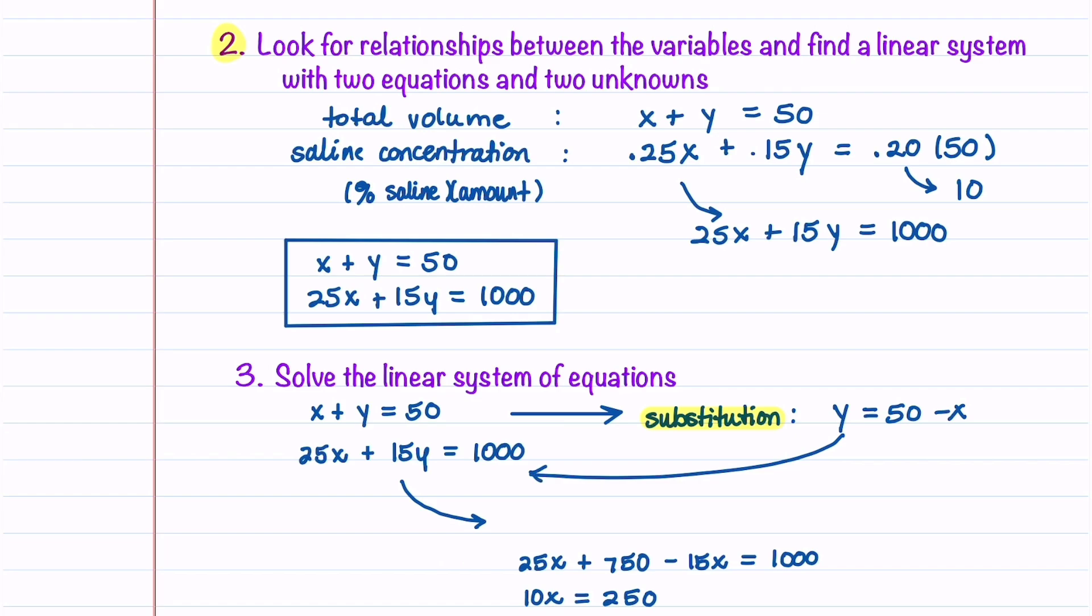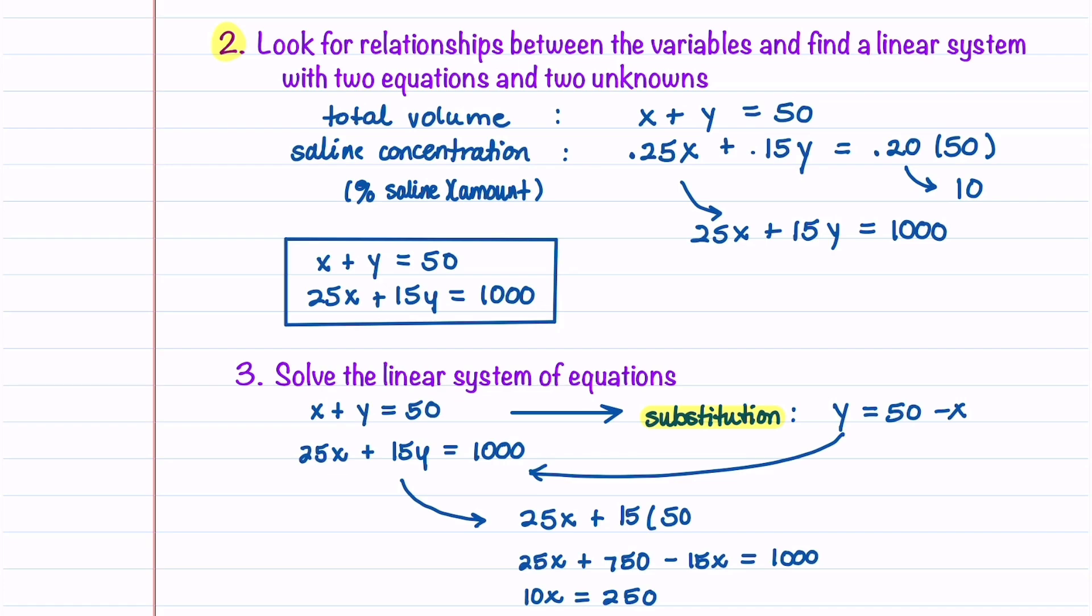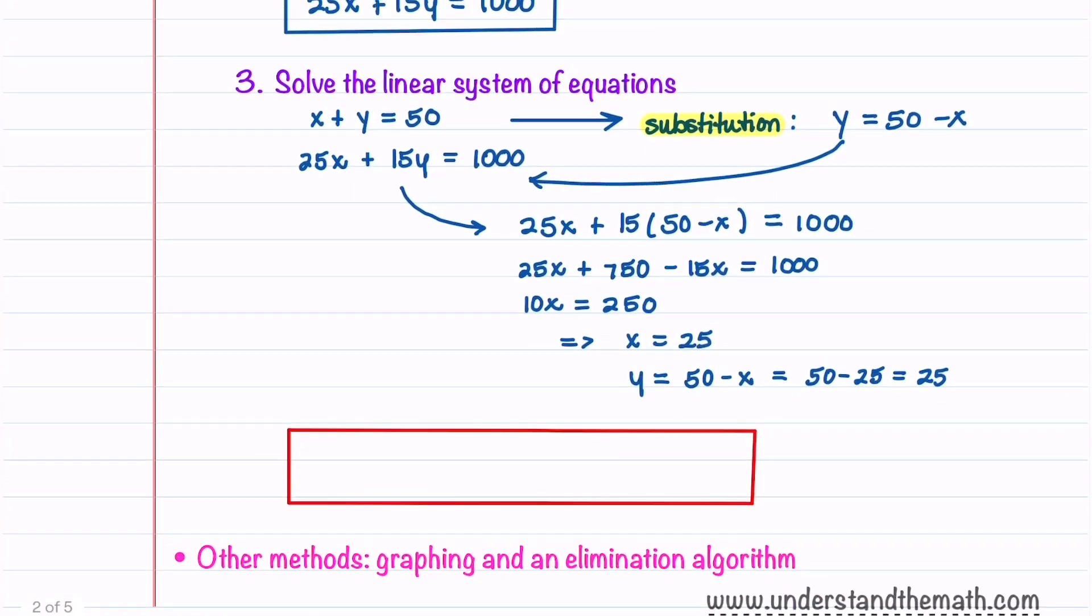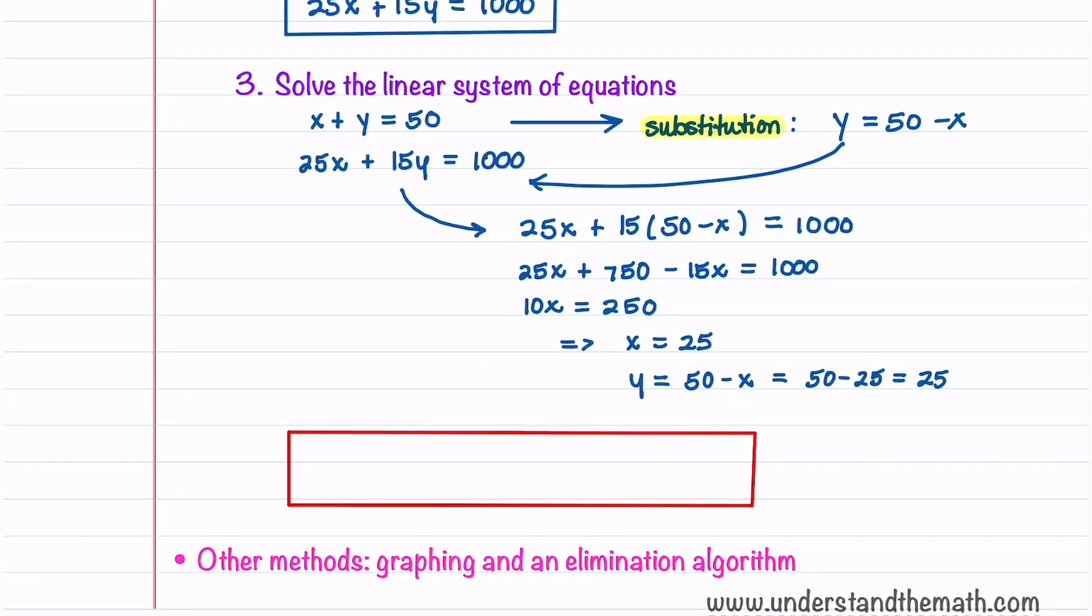Doing this, we get 25x plus 15 times our new y, which is 50 minus x, and that's all equal to 1000. I've filled in the rest of the steps. When we go through the algebra and multiply everything out, we end up with x equals 25.